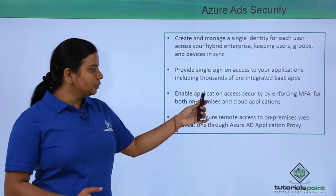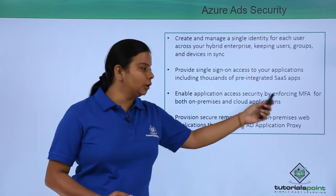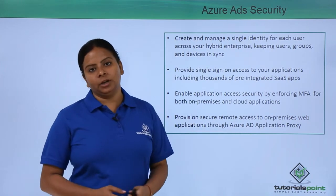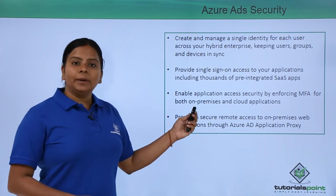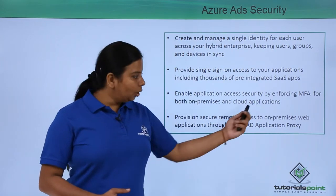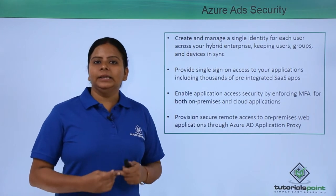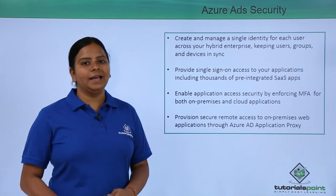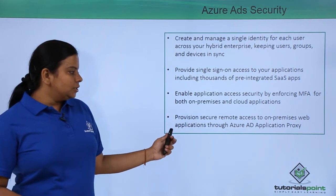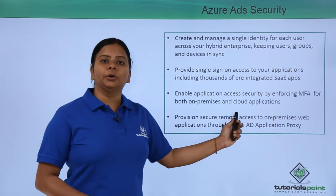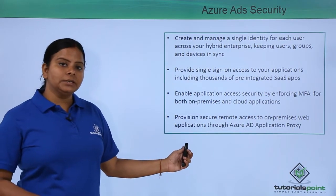Next, you are able to enable application access security by enforcing MFA both on on-premises and cloud applications. You can provide security on your private cloud or on your public cloud applications. You can define application-level security using ADS, and it also provides the provision to secure remote access to on-premises web applications you have created.